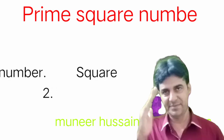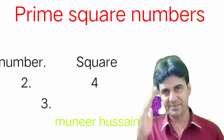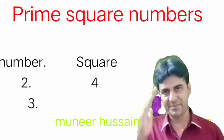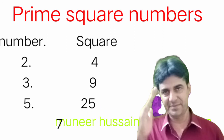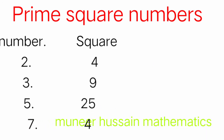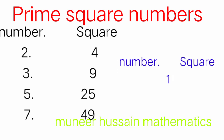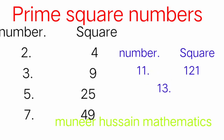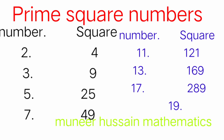Here are the prime square numbers: square of 2 is 4, square of 3 is 9, square of 5 is 25, square of 7 is 49, square of 11 is 121, square of 13 is 169, square of 17 is 289.